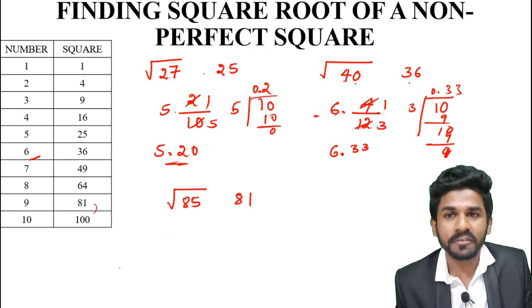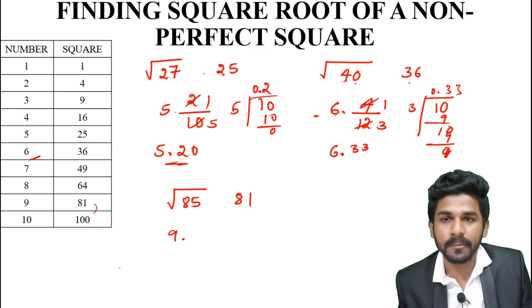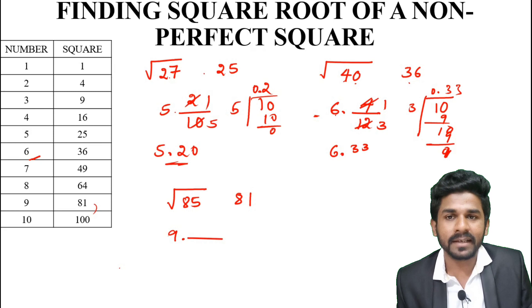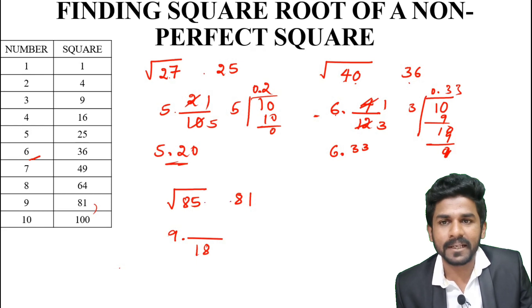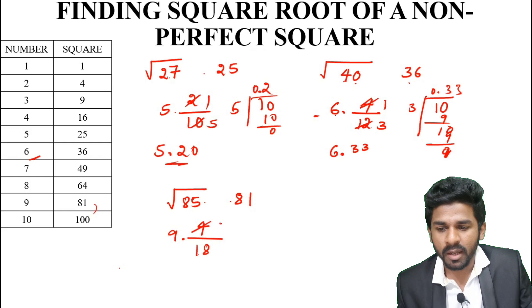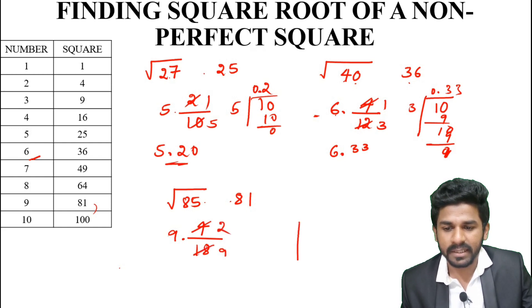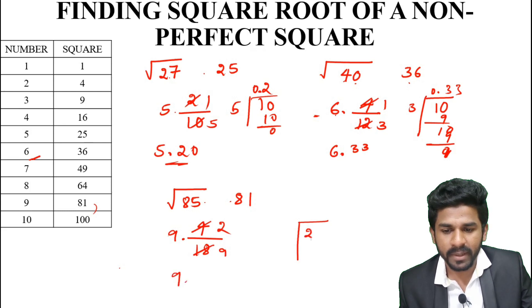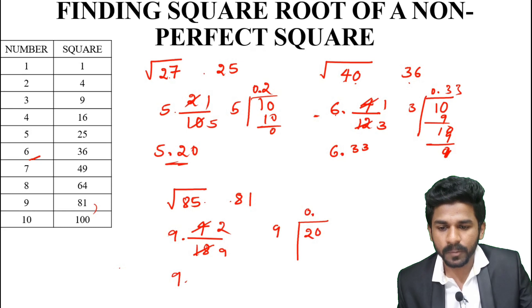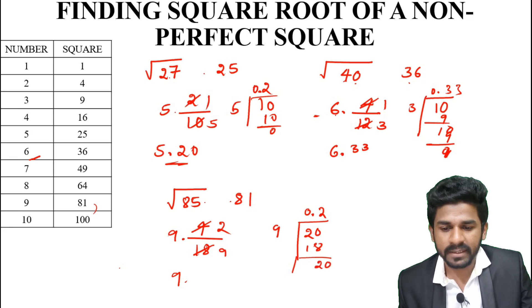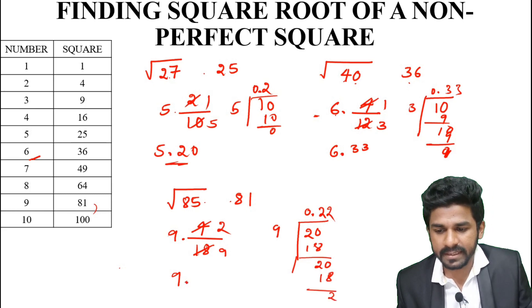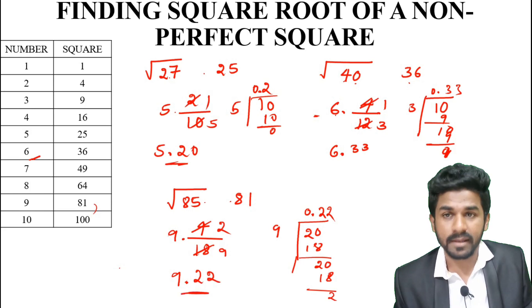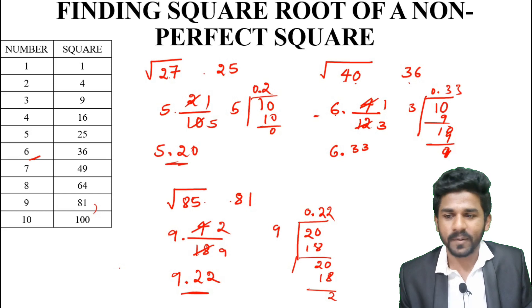Next example gives an answer of 9 point something. The nearest perfect square is 81, so √81 = 9. Double 9 is 18. Dividing gives approximately 0.22. So the answer is approximately 9.22. Check and verify your answer.